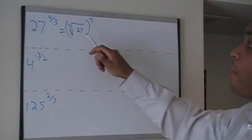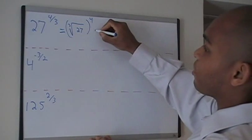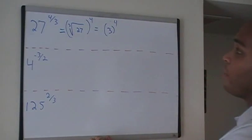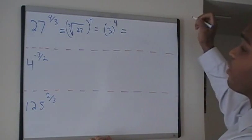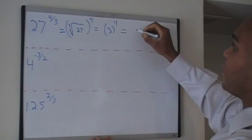So what number multiplied by itself 3 times will give me 27? Well 3 times 3 times 3 is 27 so I'm left with 3 raised to the 4th. Now 3 times 3 is 9 times 3 is 27 times 3 is 81.